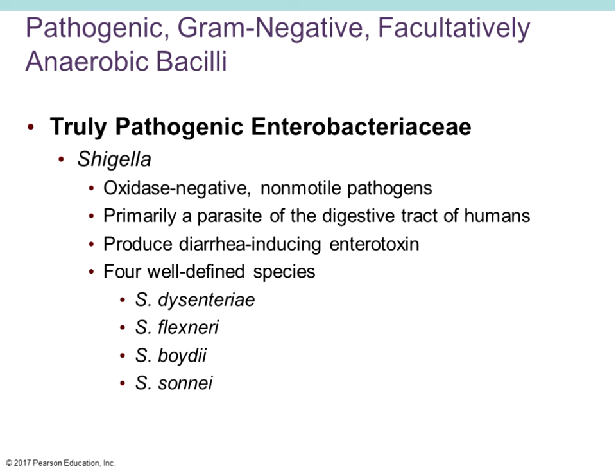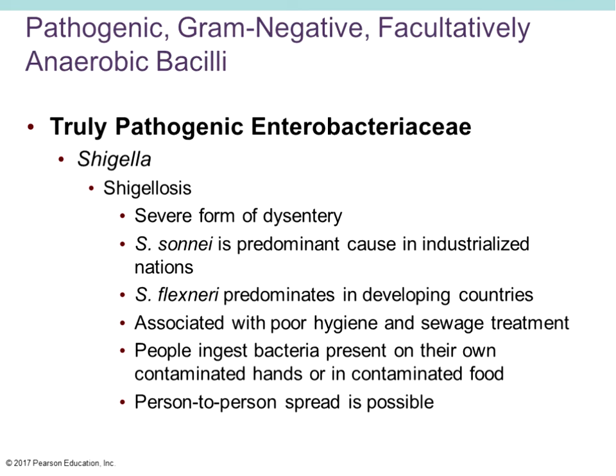There are four well-defined species of Shigella: Shigella dysenteriae, which causes very aggressive dysentery; Shigella flexneri; Shigella boydii; and Shigella sonnei. Shigellosis is a very severe form of dysentery characterized by abdominal cramps, fever, diarrhea, pus-containing diarrhea, and bloody stools. It is primarily associated with poor personal hygiene and also ineffective sewage treatment.